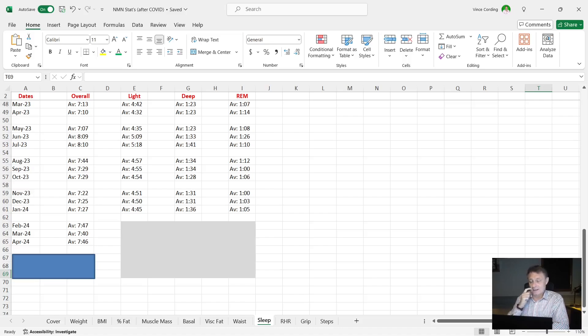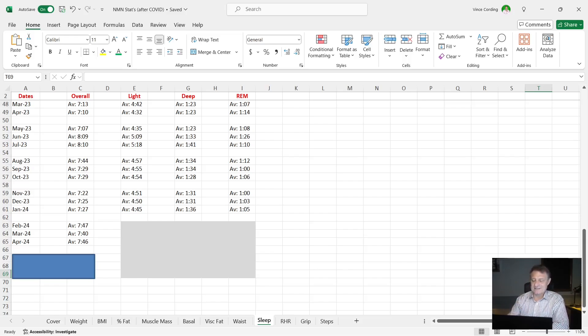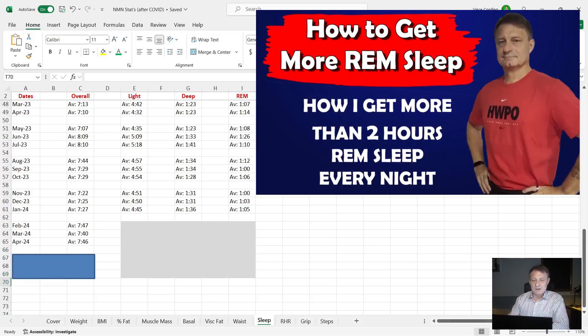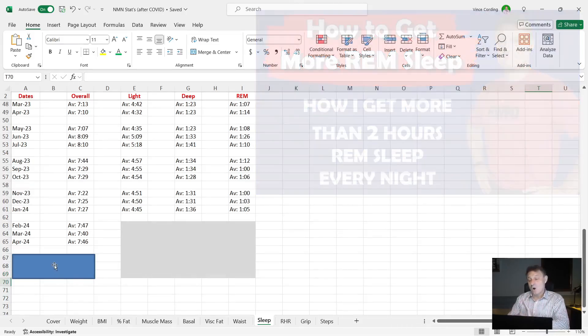In fact, one of those posts did get the comment about how good my REM sleep was, and that prompted the latest video I did on REM sleep. So my overall sleep, I'm looking for over seven hours, somewhere between seven and eight hours per night. You can see here that for the last quarter of May I got seven hours and 19 as an average.